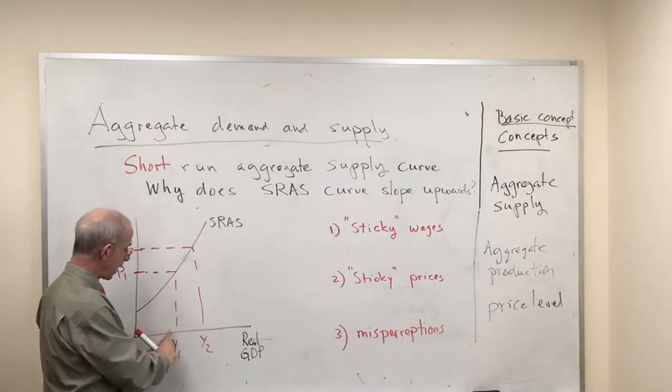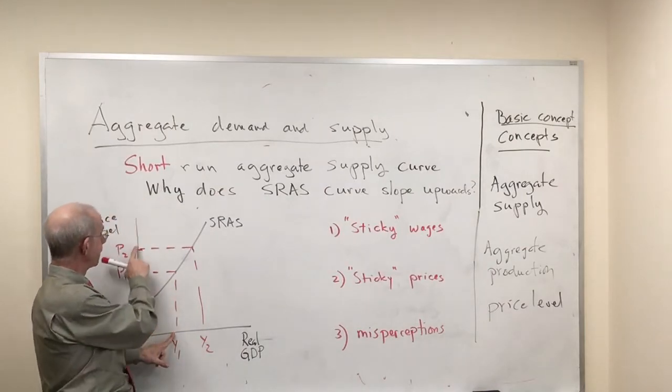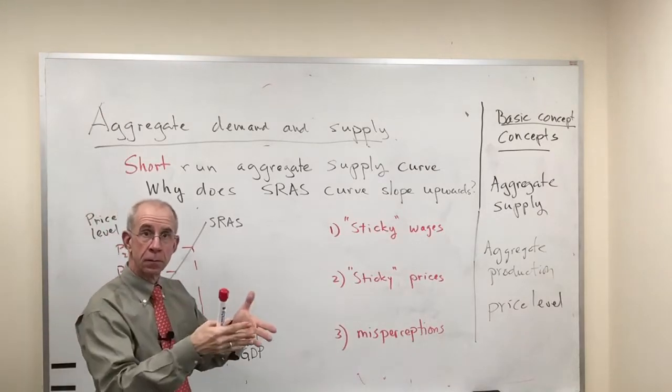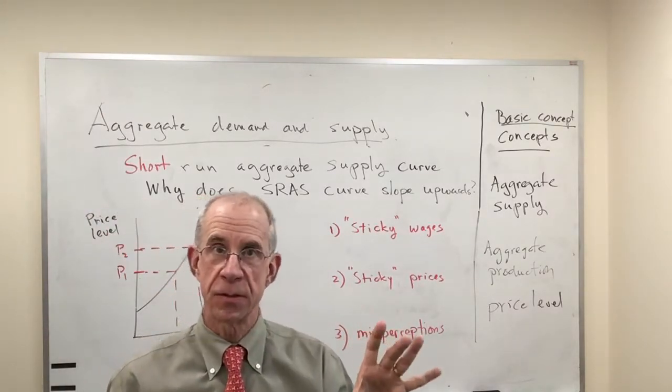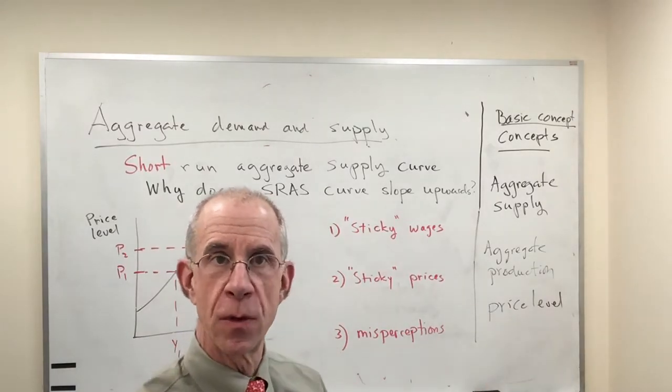They will produce more output profitably if their prices go up and their costs stay the same. So the bottom line with this: prices go up, output will increase because wages don't adjust quickly. That's one reason.